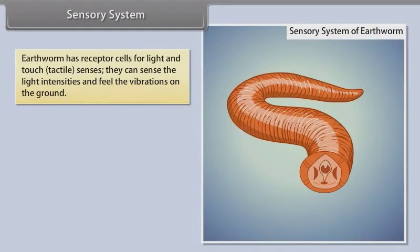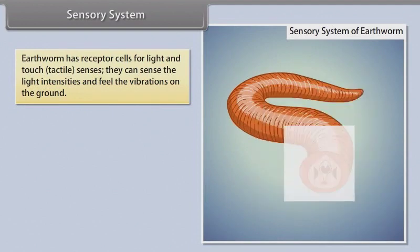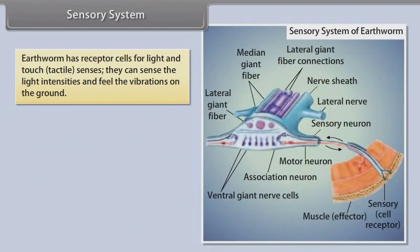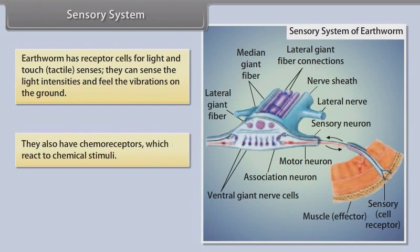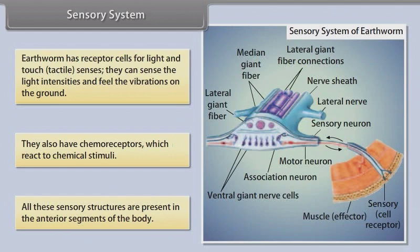Earthworm has receptor cells for light and touch (tactile senses). They can sense light intensities and feel vibrations on the ground. They also have chemoreceptors which react to chemical stimuli. All these sensory structures are present in the anterior segments of the body.